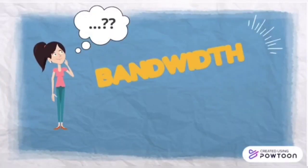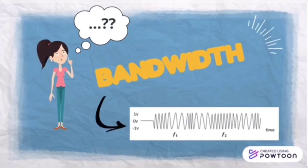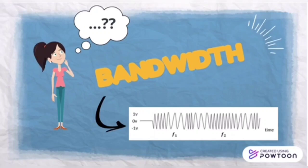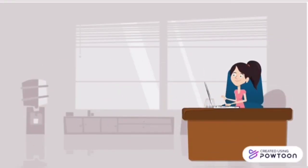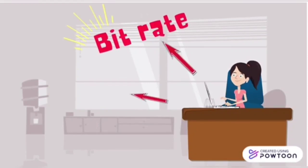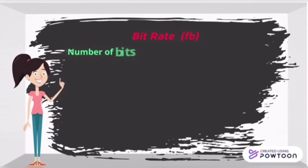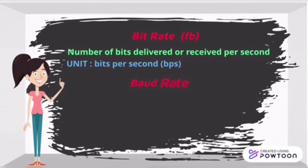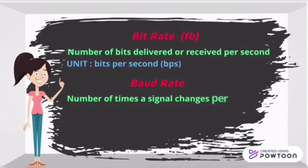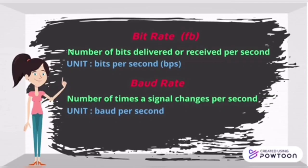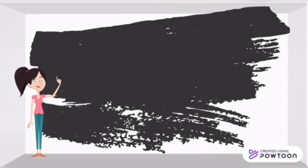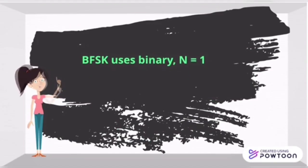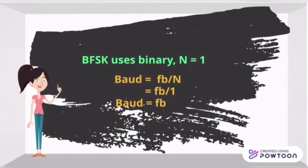Let's find out how to calculate the bandwidth of the frequency shift keying modulator. Remember that FSK has two different frequencies. To calculate the bandwidth, we need to know two important parameters: the bit rate and the baud rate. Bit rate is the number of bits delivered or received per second, with unit bits per second. Baud rate is the number of times a signal changes per second, with unit baud per second. Baud rate is calculated by dividing the bit rate by the number of bits per signal period. In binary FSK, N is equal to 1, so the baud rate equals the bit rate.